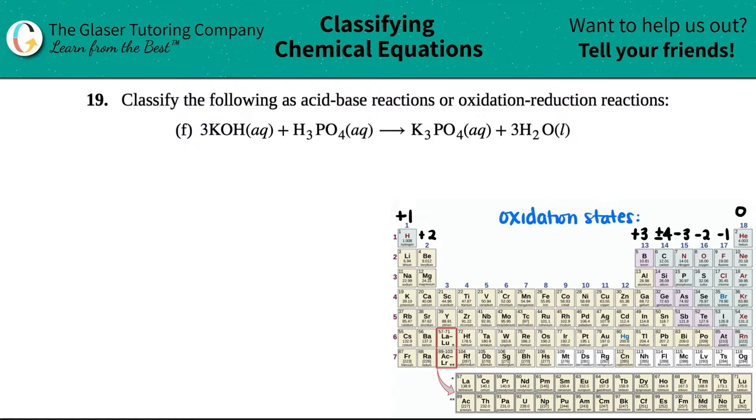Number 19, classify the following as an acid-base reaction or an oxidation-reduction reaction, and then we have letter F. So we have this reaction, and we just need to find out if this is an acid-base reaction or an oxidation-reduction reaction.